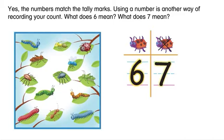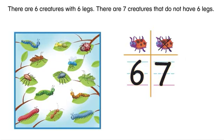There are six creatures with six legs. There are seven creatures that do not have six legs.